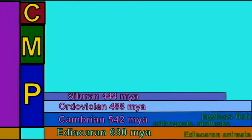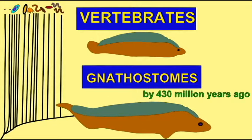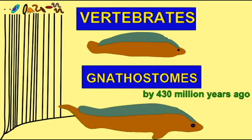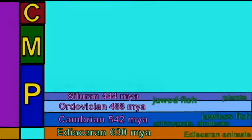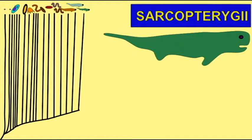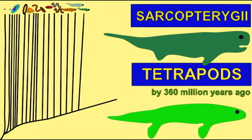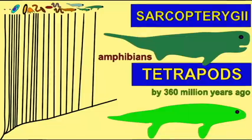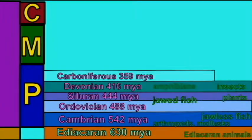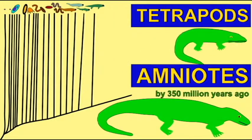Amphibians first appear on land tens of millions of years after the jawed fish. And then the first reptiles occur after the fossils of the first amphibians. So there is an order in how the groups of life appear on earth.